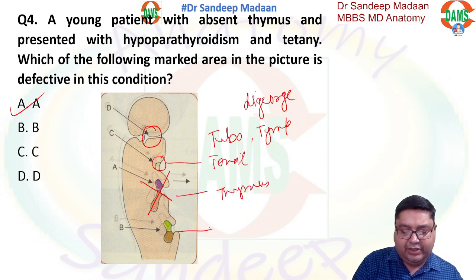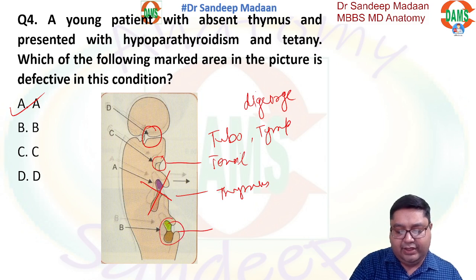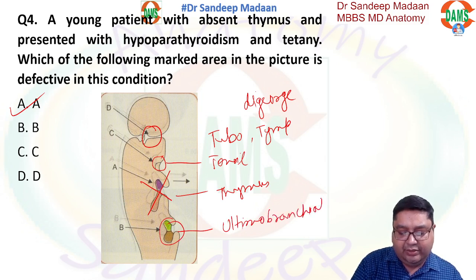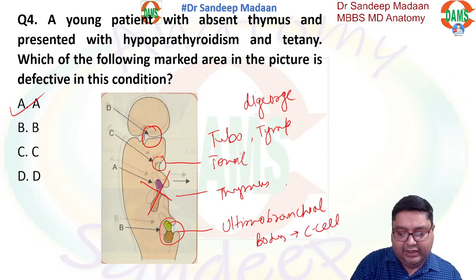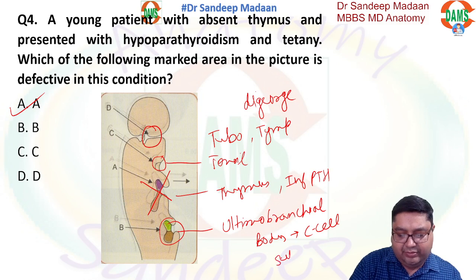From the fourth pouch we have the ultimobranchial body, which makes the parafollicular C cells. The third pouch also contributes to the inferior parathyroid, and the fourth pouch contributes to the superior parathyroid.